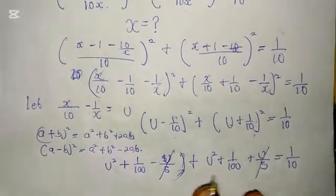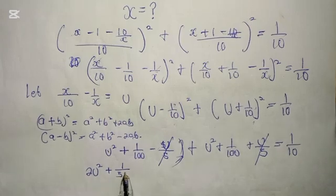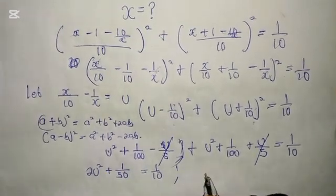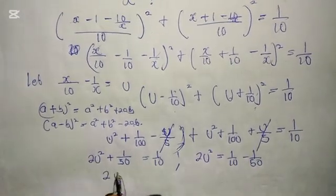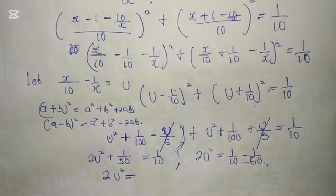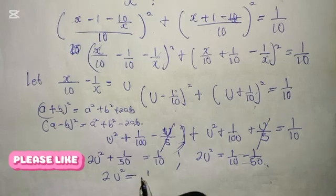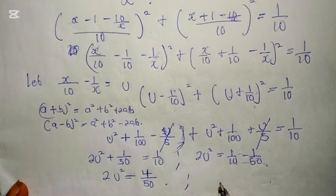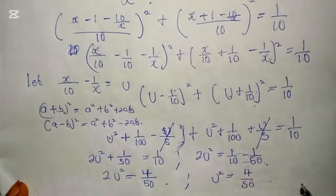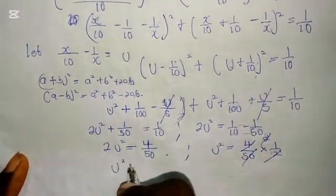Now combining: u squared plus u squared gives 2u squared, and adding the two constant terms gives 2 over 100, which is the same as 1 over 50. So we have 2u squared plus 1 over 50 equals 1 over 10. Therefore 2u squared equals 1 over 10 minus 1 over 50, which gives us 4 over 50. Dividing both sides by 2: u squared equals 4 over 50 times 1 over 2, which simplifies to 1 over 25.